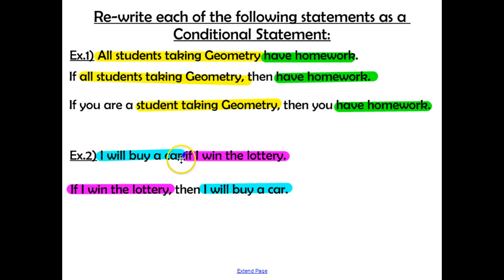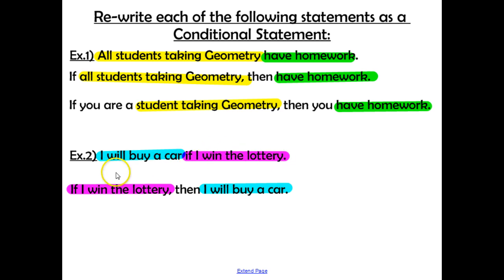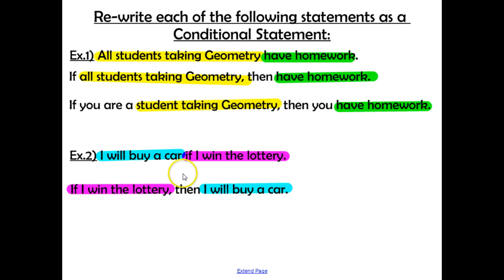In the second example: 'I will buy a car if I win the lottery.' This one already has the word if, so we can't keep the two parts in order. The part following if needs to come first, and the other part goes after then. So the statement reads: 'If I win the lottery, then I will buy a car.' Remember, the if is the hypothesis, and if this happens, then the conclusion will happen.